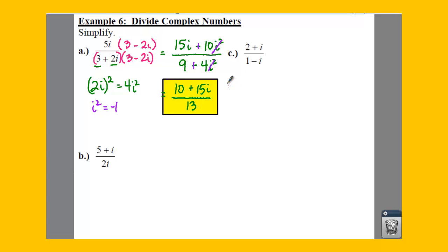So if we want to do the same thing here, we're going to skip b and come back to it in a minute. We're going to go to part c, where in this case, we're going to multiply top and bottom by 1+i.